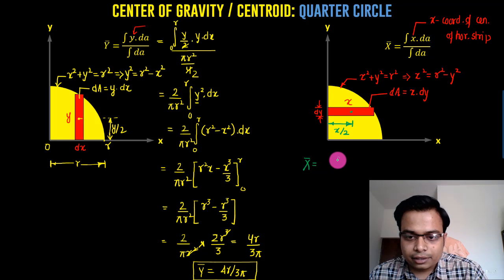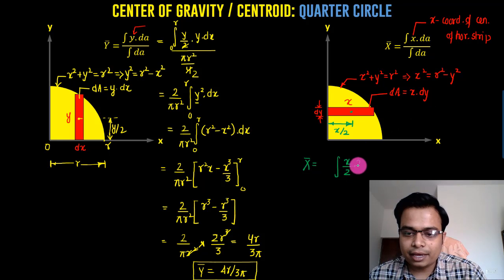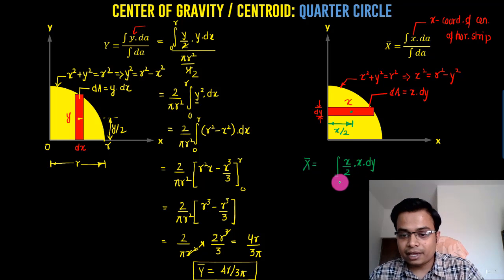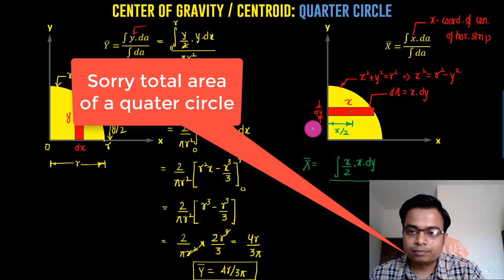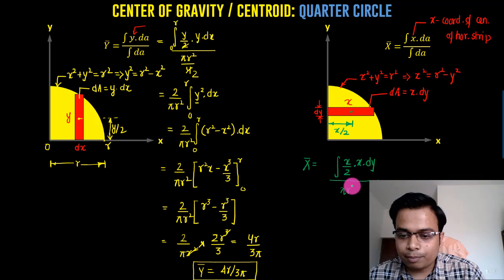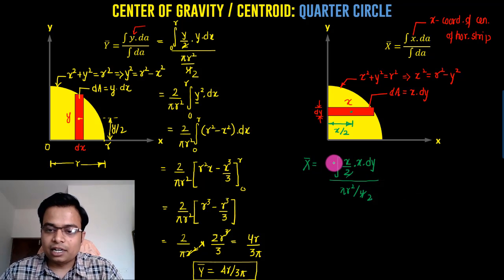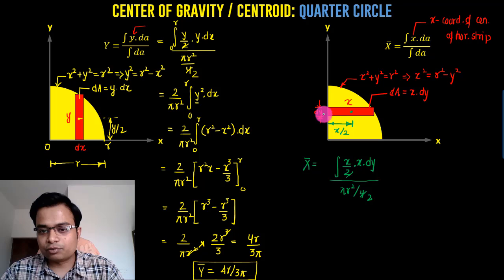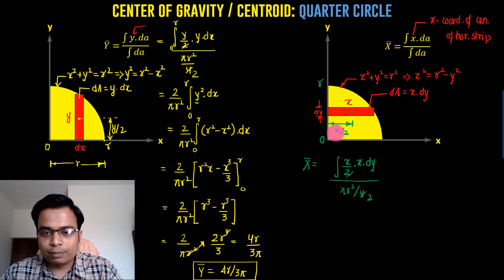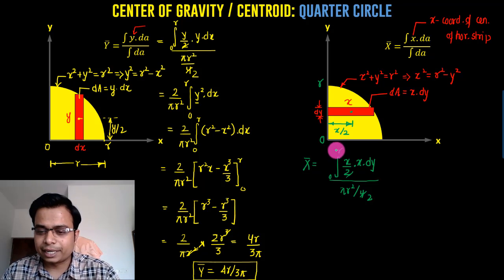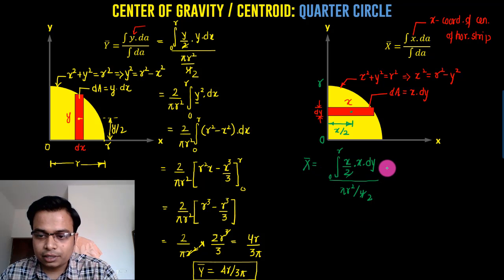x̅ is equal to the integral of (x/2)·dA, where dA = x·dy, divided by the total area. The total area of the quarter circle is πr²/4. The 2 times 2 gives 4, so we get (2 / πr²). The limits: y varies from 0 to r, as the strip sweeps from 0 until you reach r.